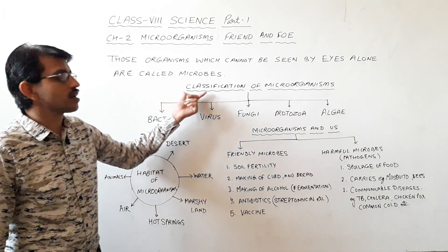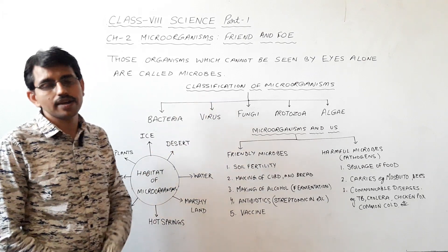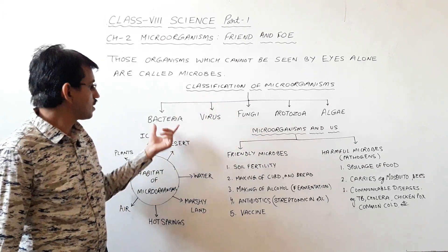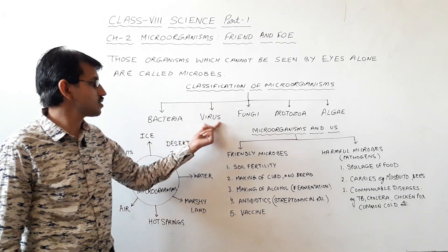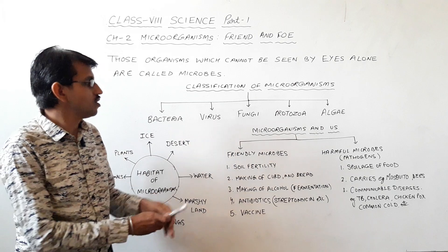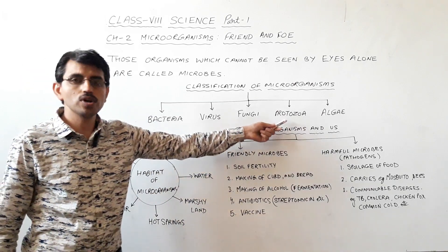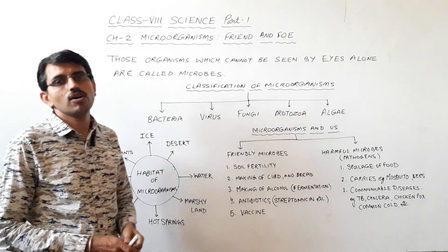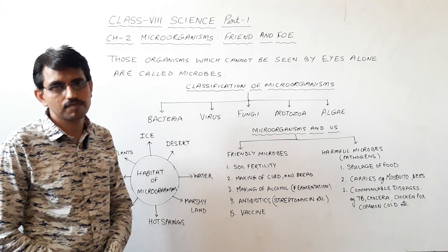We can classify the microbes into five categories: bacteria, virus, fungi, protozoans, and algae. They all are micro-organisms, and we need a microscope to observe them.